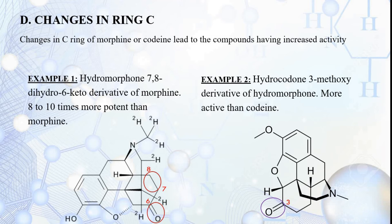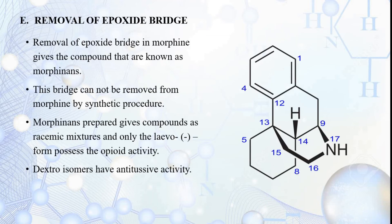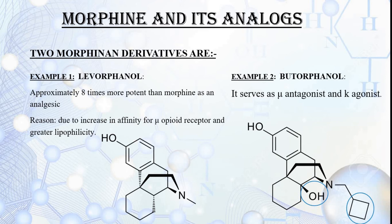Removal of the epoxide bridge gives morphinan. The racemic mixture has only the levo form as the opioid-active form; the dextro isomer has antitussive activity. Levorphanol has an OH group and produces effects similar to morphine but with lower incidence of nausea and vomiting, being 2 to 3 times more potent than morphine. Butorphanol has a structure similar to levorphanol except for an OH group at the 14th position and a cyclobutyl moiety at the 17th position, with analgesic activity 4 to 7 times more than morphine.